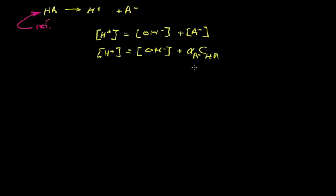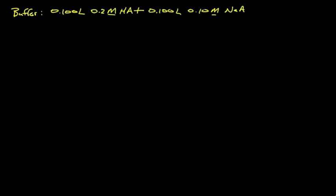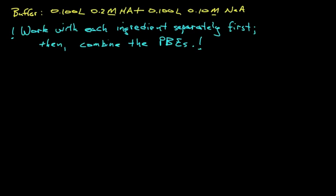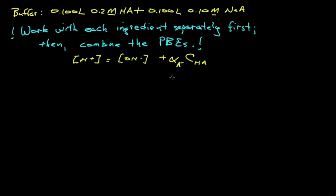Let's consider a buffer that's a combination of acetic acid and an equal volume of sodium acetate mixed together. The important insight: work with each ingredient separately first, then combine the PBEs — it's much simpler that way. We just completed the PBE for the addition of acetic acid, obtaining: H⁺ = OH⁻ + α(acetate anion) × C(HA). Now let's consider the addition of sodium acetate.